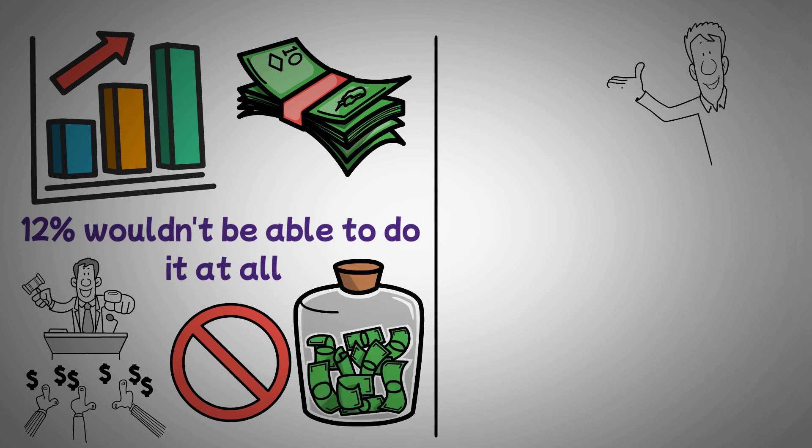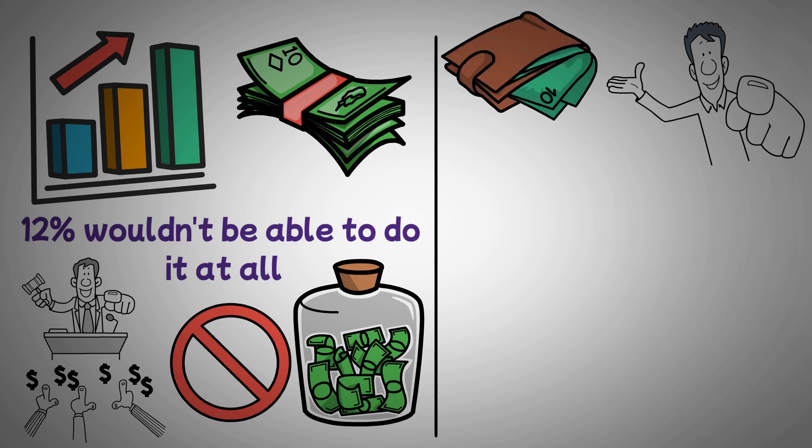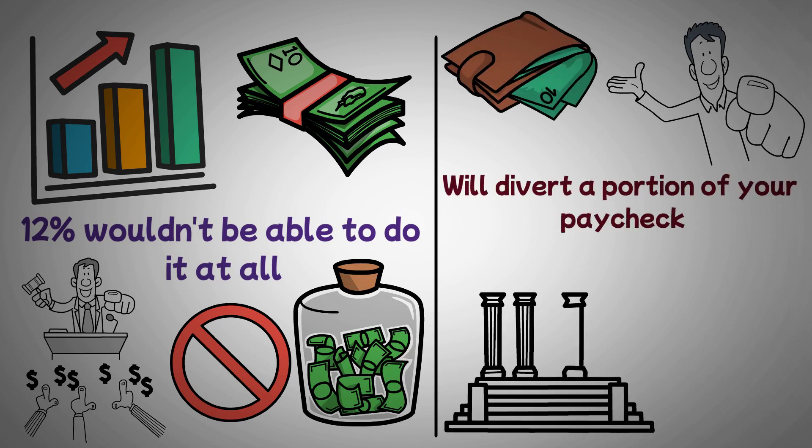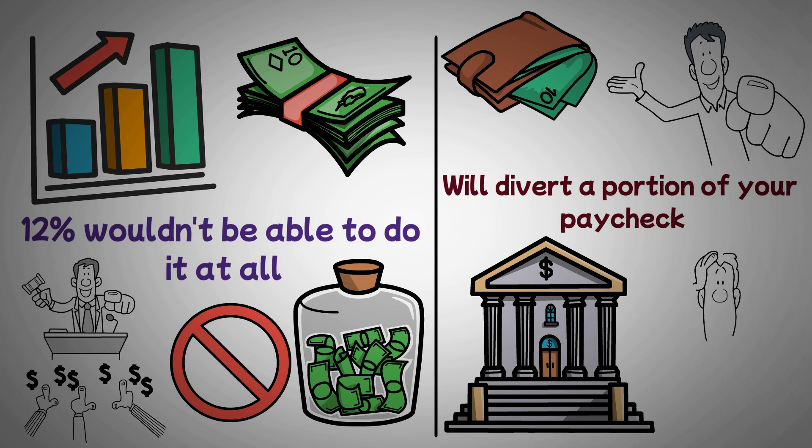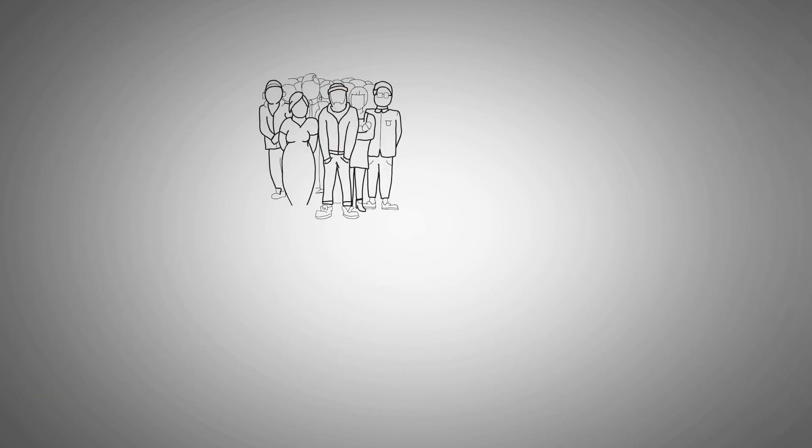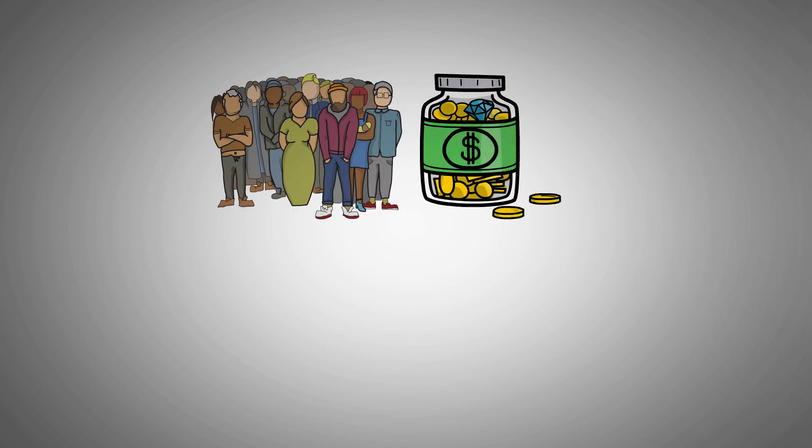All you need to do is ask your employer to set up an automatic 10% withdrawal from your pay, which will divert a portion of your paycheck to an emergency savings account. How do you determine when you've saved enough? The majority of financial experts advise you to save up to six months' worth of costs. One year's worth is a wonderful objective to set, though, if you want to be extra cautious.